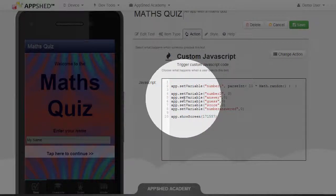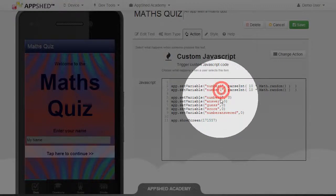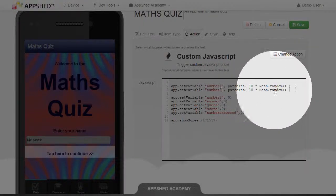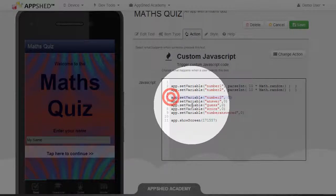Actually, this code is quite useful for number 2 as well. All I have to do is change the variable name to number 2, and that will also be a random integer. That means I can delete this line here.